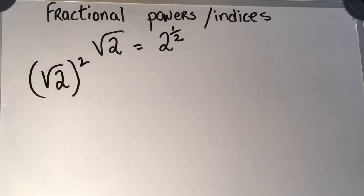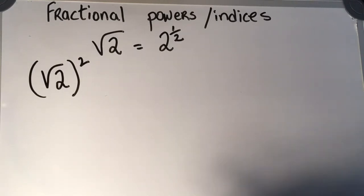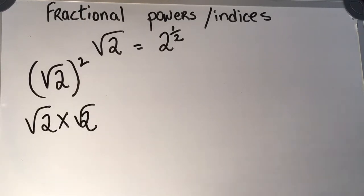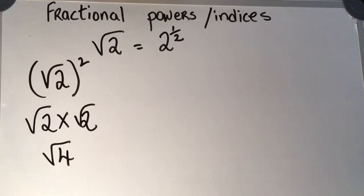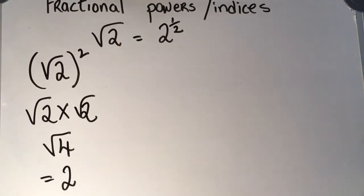On the left-hand side, we have the square root of 2, and I'm squaring it. Squaring means multiply by itself. So that's the square root of 2 multiplied by the square root of 2, which is the square root of 4, which is 2.